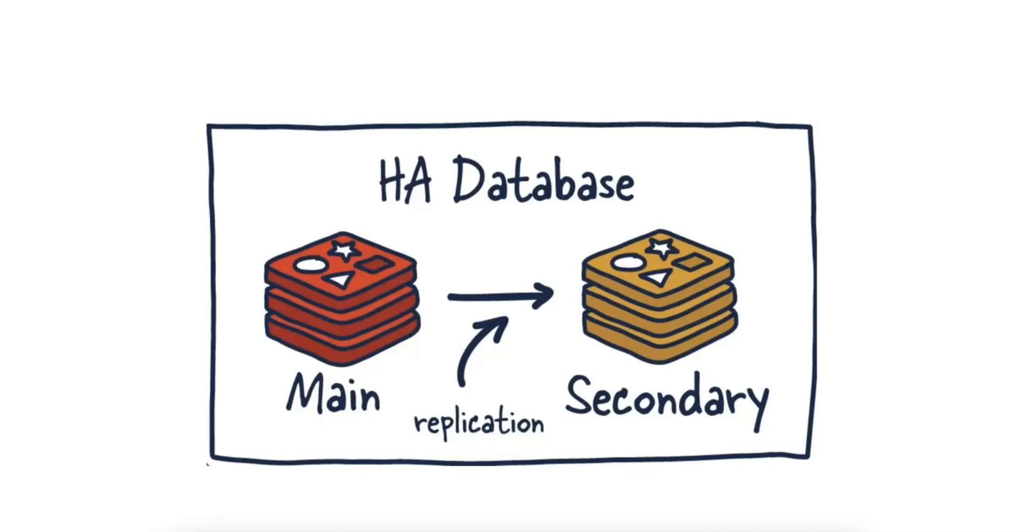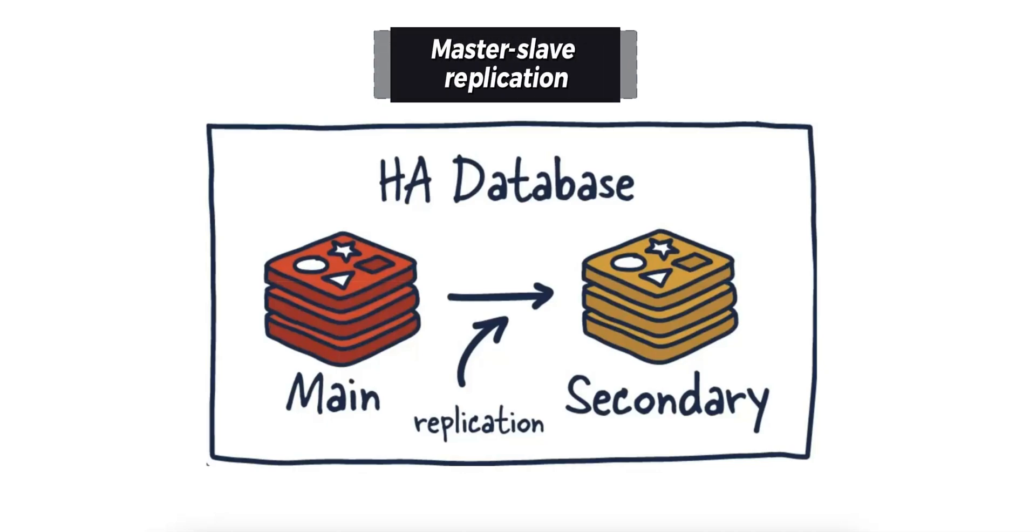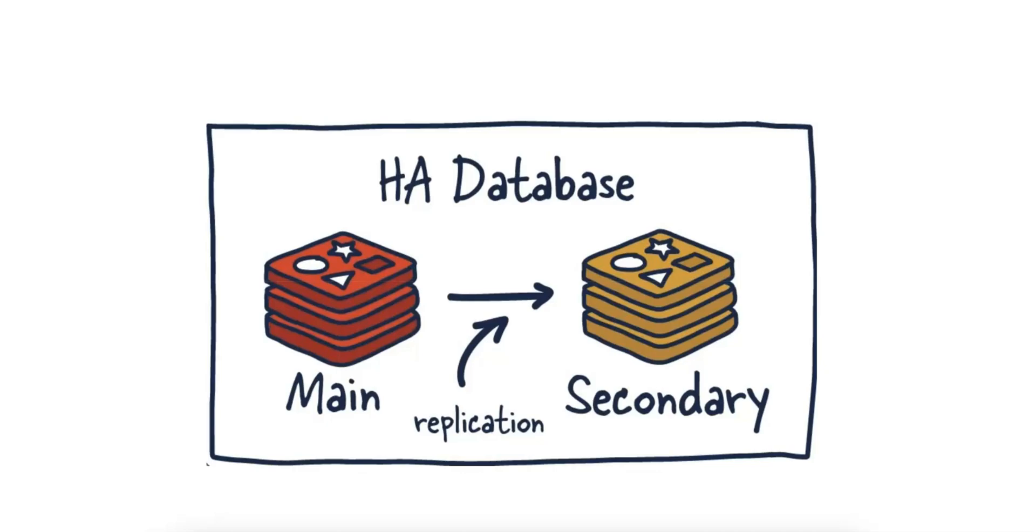How about Redis in a high availability setup with master-slave replication? To overcome the limitations of a single Redis instance, you can configure Redis in a high availability setup using master-slave replication. This setup includes a primary master instance and one or more secondary slave instances, which replicate data from the master.